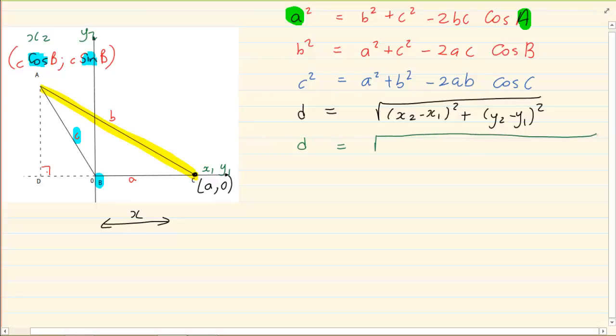So I'm going to say x2 which is C cos B minus my x1 which is A all squared plus my y2 which is C sin B minus my y1 which is 0 all squared. Remember I'm using my x2, y2, x1, y1. Now we get rid of the brackets.